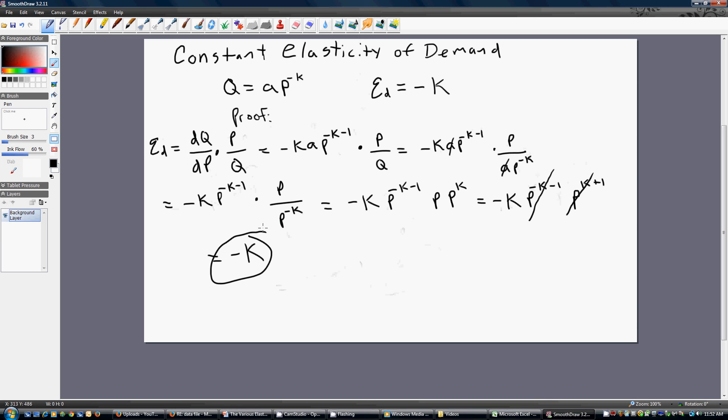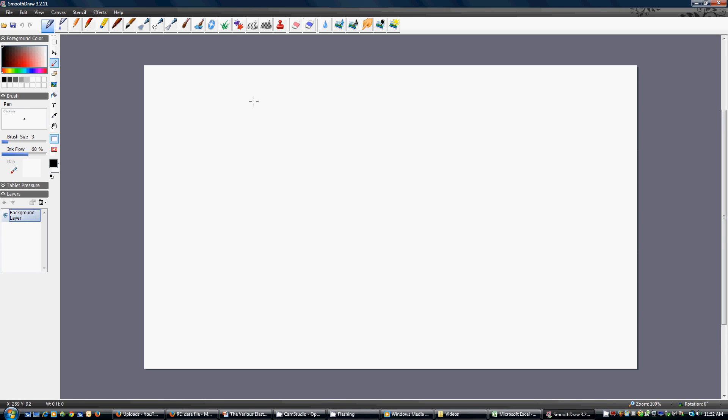Let's try another example, this time just using some numbers. Here's a constant elasticity of demand. What we learned from the previous slide was that the price elasticity of demand should just equal minus 2. No matter where we are on the demand curve, no matter what price we're evaluating this demand function at, the price elasticity of demand will always equal minus 2.